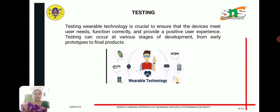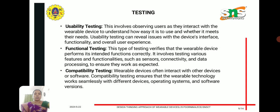Testing the wearable technology is crucial to ensure that devices meet user needs, function correctly, and provide a positive user experience. Testing can occur at various stages of development, from early prototypes to final products. Key testing functions include usability testing, functional testing, and compatibility testing. Usability testing involves observing users as they interact with the wearable device to understand how easy it is to use and whether it meets their needs. Functional testing ensures the device performs its intended functions correctly, and compatibility testing checks that it works with other software and devices.